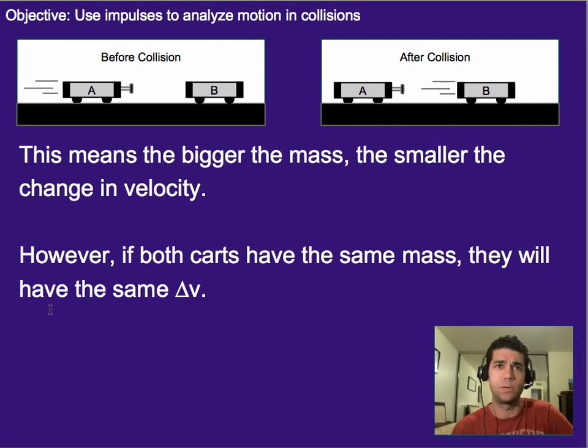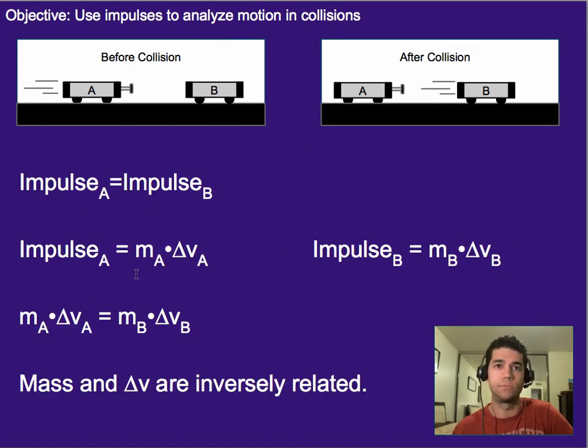So, this explains why, if you run a huge cart into a small cart, the big cart's not really going to change its velocity very much. It's going to keep doing what it's going to do, versus the small cart's going to have a huge change in velocity, simply because the same force, and therefore impulse, can result in a larger change in velocity when the mass is much smaller.